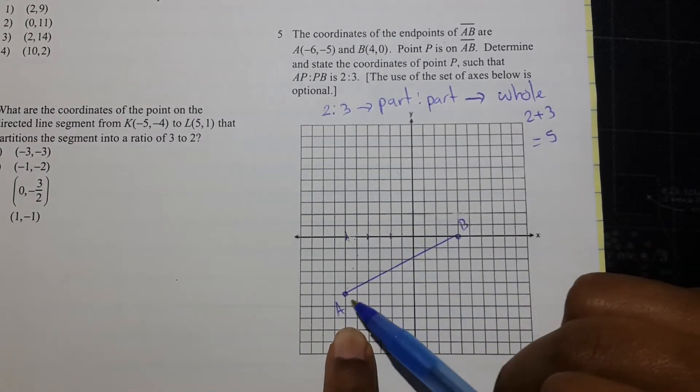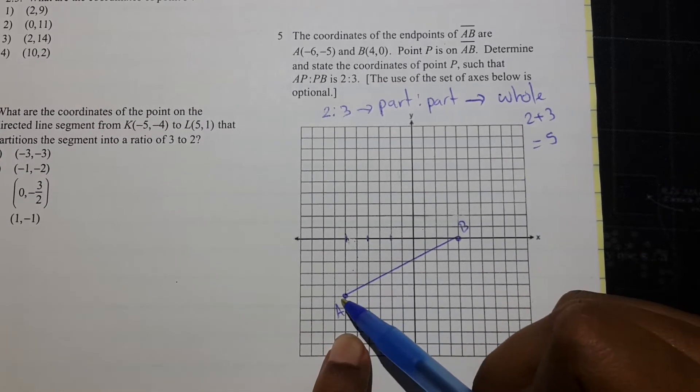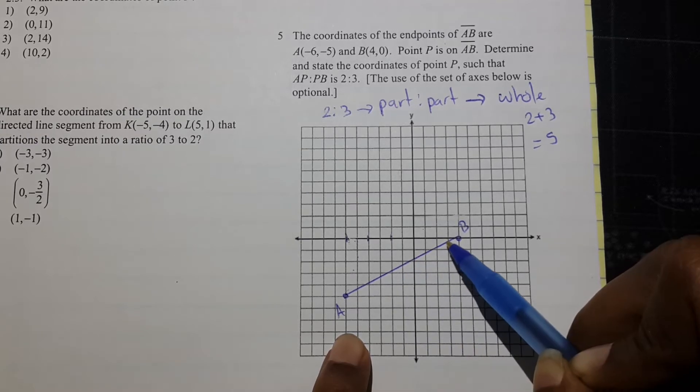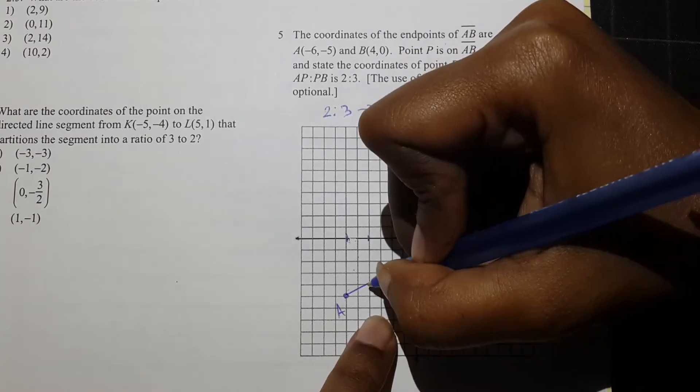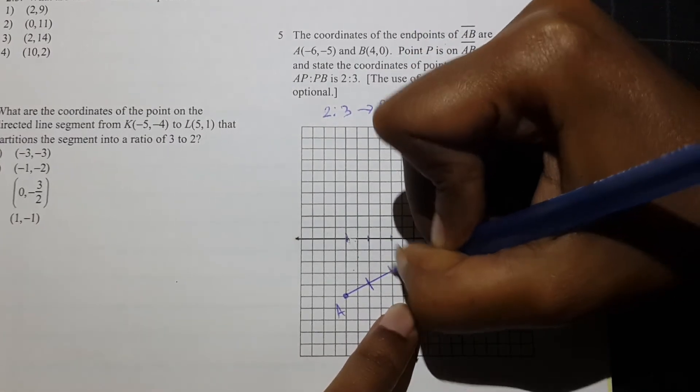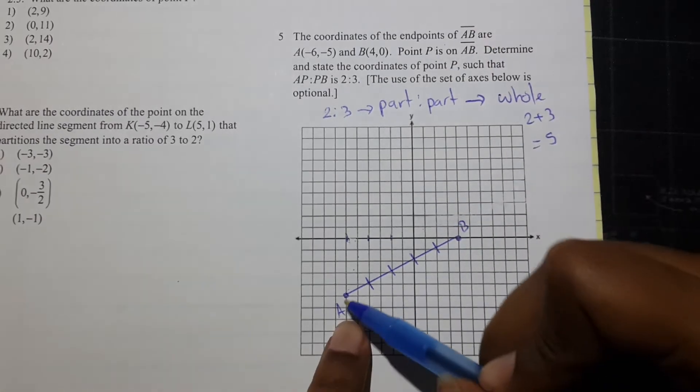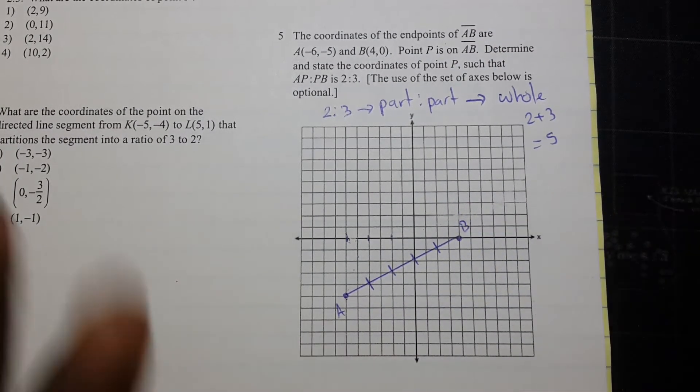So we can divide this line segment up 5 times, right? If you count this 1, 2, 3... it's 10 across, we can just divide it equally by 2 spaces each. So I'm just going to mark that, and now I end up with 1, 2, 3, 4, 5 segments.